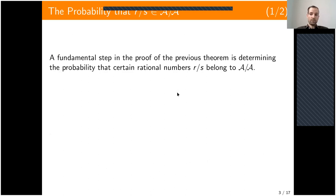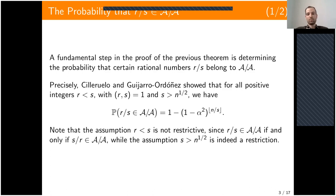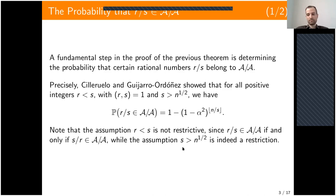A fundamental step in the proof is determining the probability that a certain rational number r/s belongs to the random ratio set. In particular, they showed that if r is less than s and they are coprime with s greater than the square root of n, then the probability that r/s belongs to the random ratio set is given by a specific formula. Note that the assumption r < s is not a restriction, since x belongs to the ratio set if and only if x⁻¹ does. However, the assumption that the denominator is large is indeed a restriction.